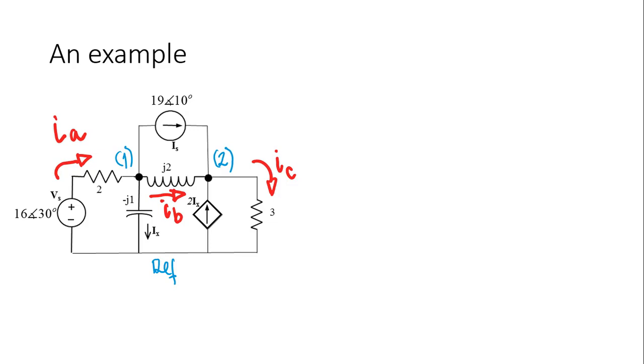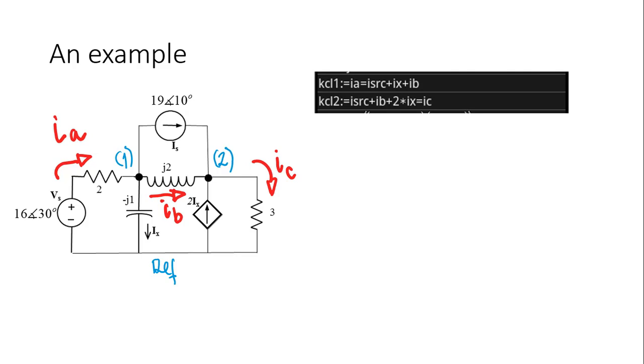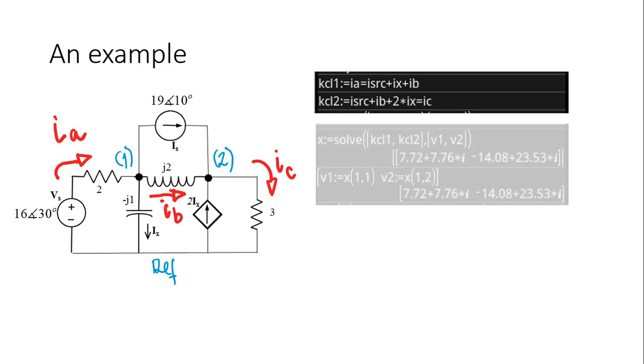And we will know them now. The calculator has it. We can write the Kirchhoff equations for node one and two very succinctly. Kirchhoff for node one: currents going in, only one, ia. Currents leaving node one, there are three of them: the current source on the top, ib in the middle, and ix through the capacitor at the bottom. And for Kirchhoff two we have three currents entering the node: the current source, ib, and two times ix. And leaving the node we have ic.